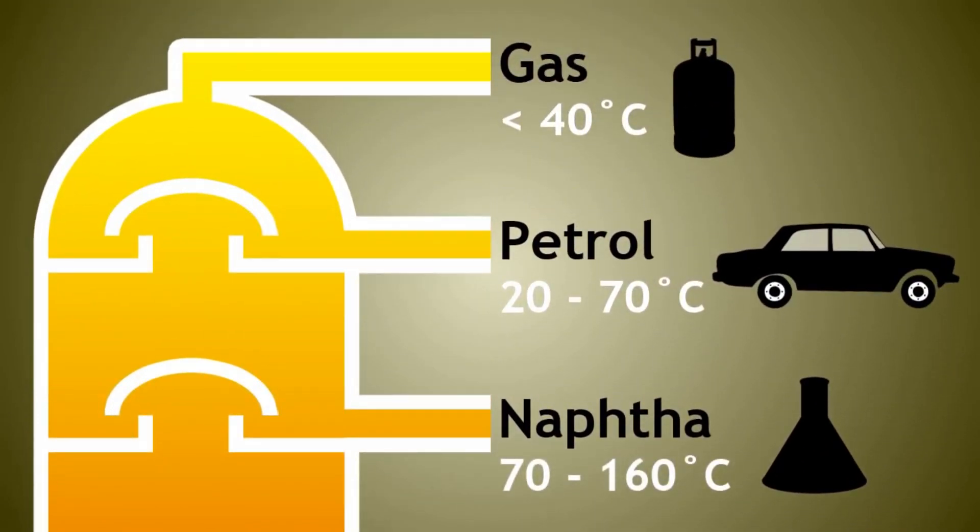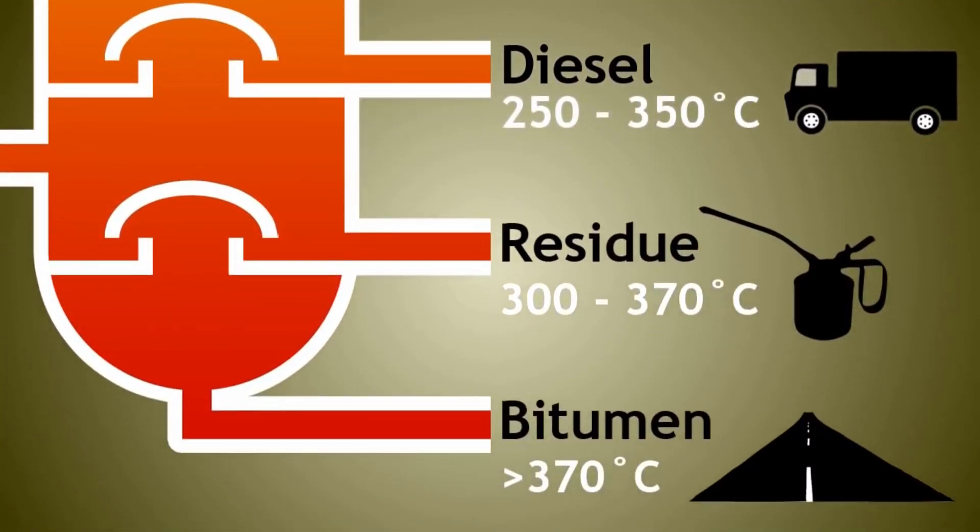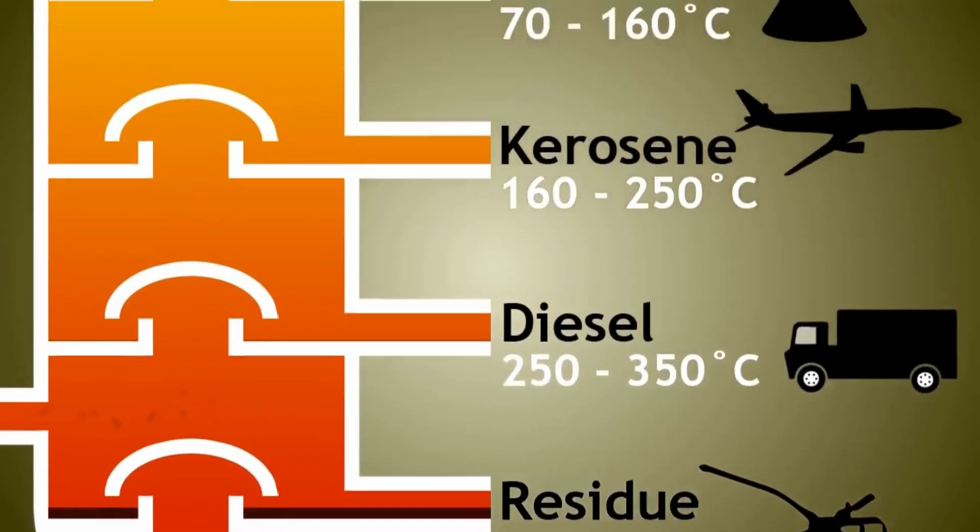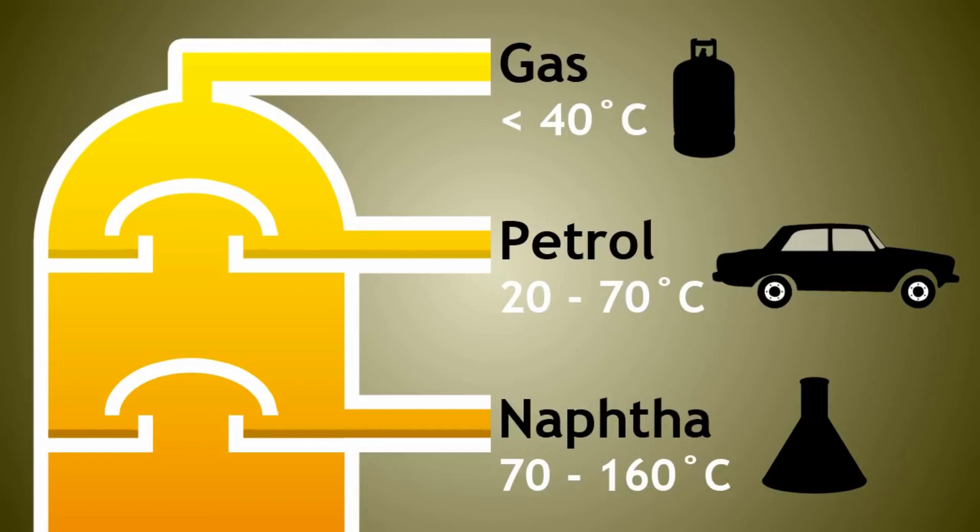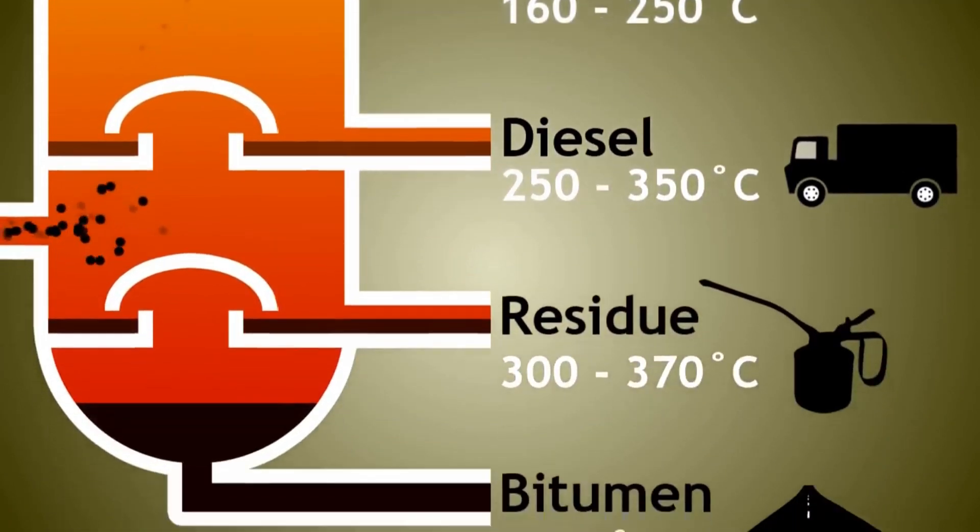As you are now aware, large hydrocarbons have higher boiling points and so are removed at the bottom of the fractionating column. Smaller molecules condense higher up the column. We will now take a look at some of the common fractions as we move down from the top of the fractionating column.